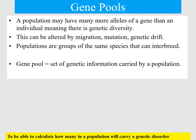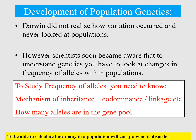A population may have many more alleles of a gene than one individual, and this gene pool contains the genetic diversity. It can be altered by things like migration or mutations — this is called genetic drift, which we'll cover in a later video. Populations are the same species that can interbreed. Darwin didn't look at this when he looked at variation; he never looked at populations, so this has allowed us to understand evolution a lot more.